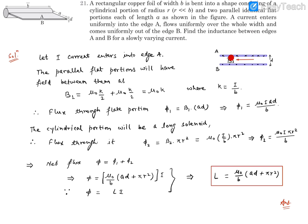Current is going inside from here and coming outside from here. Now these portions will behave like parallel sheets having uniform current distribution.